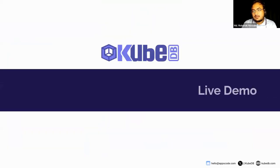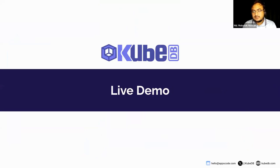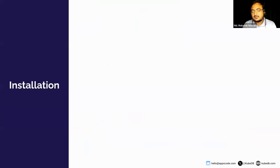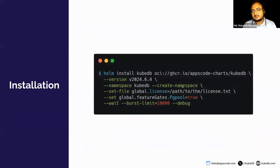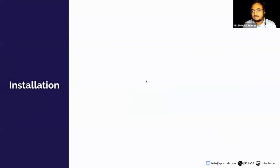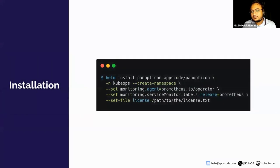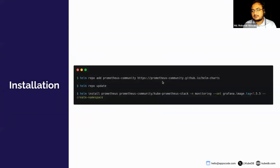For the demo we will use KubeDB. You can install KubeDB using the install command, specifying PgPool and the latest version. You should also have Panopticon — this is a resource created and managed by AppsCode — and Panopticon is necessary for the monitoring part. You should also have the Prometheus stack; you can install all of them using the provided commands.